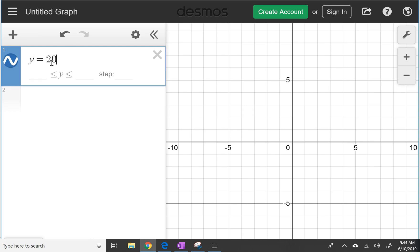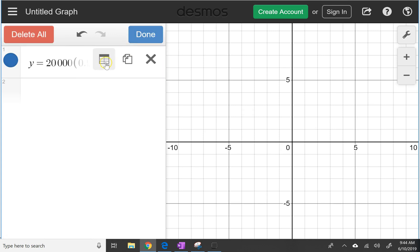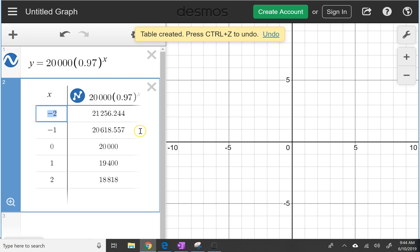So we have Y equals twenty thousand times 0.97 raised to the X power. And the reason I do that is so that when I duplicate it and convert it to a table, it all comes out nicely.